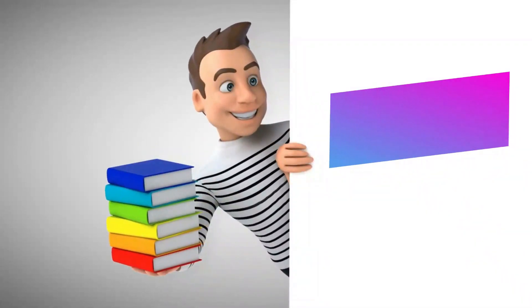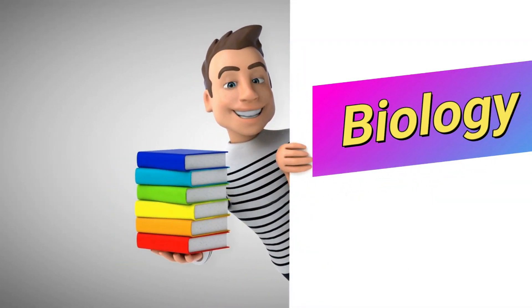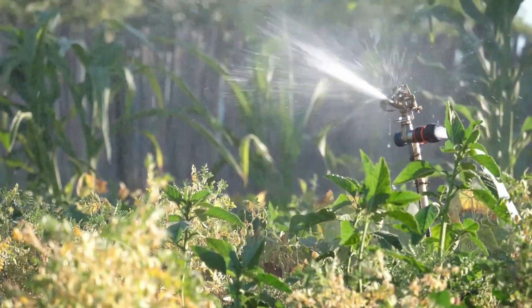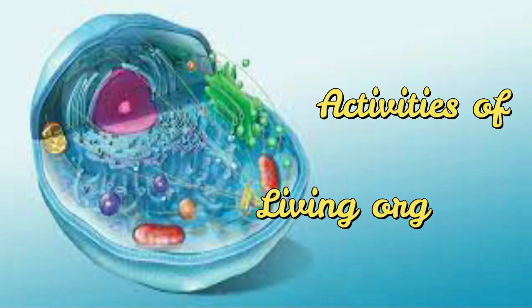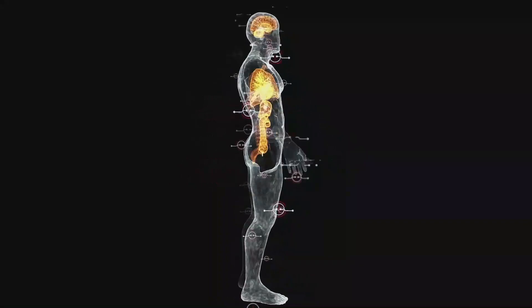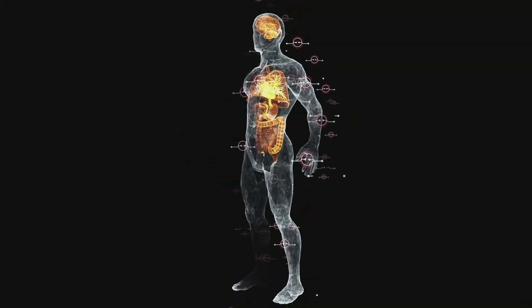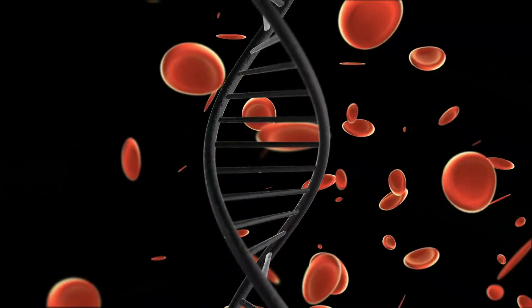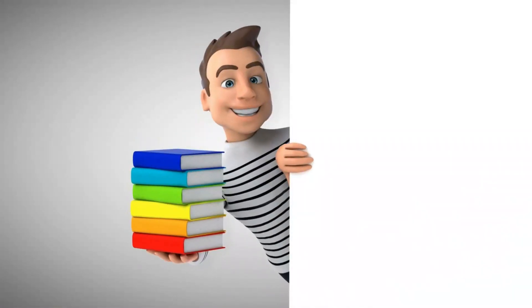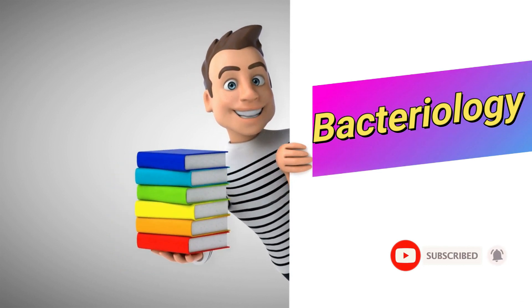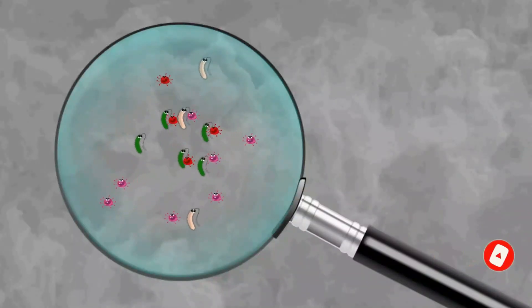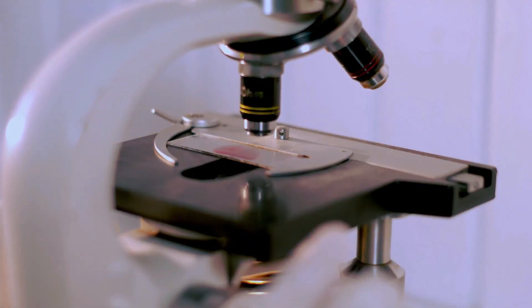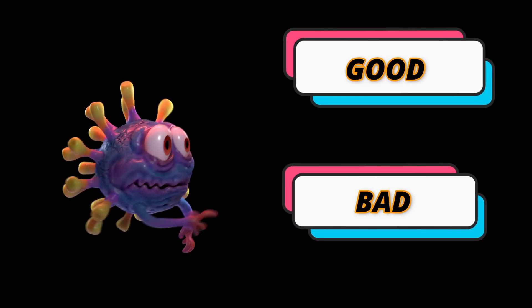The next branch is biology. Biology is the scientific study of life. It is a natural science in which we study different activities of living organisms. Biologists are able to study life at multiple levels of organization, from the molecular biology of a cell to the anatomy and physiology of living organisms and the evolution of populations. The next branch is bacteriology — the study of structure and function of bacteria, including the advantages and disadvantages of bacteria. Some bacteria are good while others are bad for us.